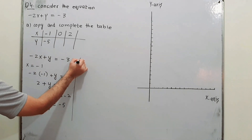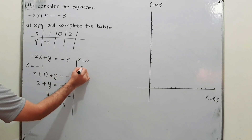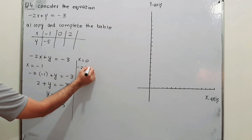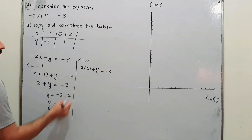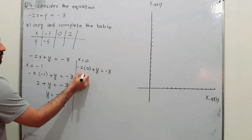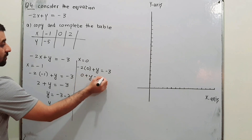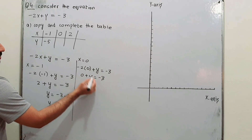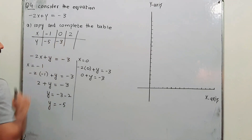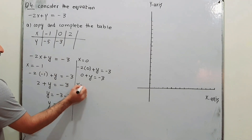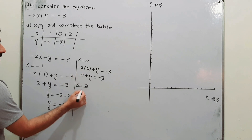Using x = 0 in the same equation: minus 2 into 0 plus y = minus 3. Since minus 2 into 0 is 0, we get y = minus 3. So when x is 0, y is minus 3.